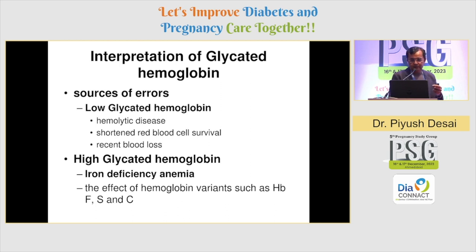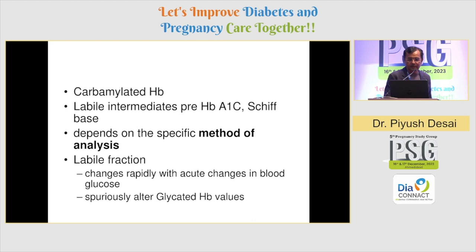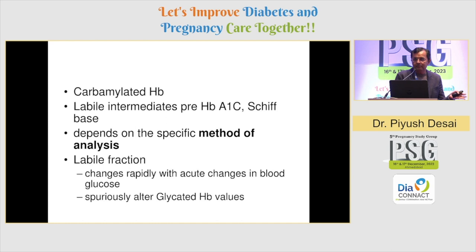This is very important: if a patient recently has very high sugar, their HbA1C may go up — that doesn't mean the patient has had uncontrolled sugar for the last three months. HbA1C can also lead you in the wrong direction. If a patient is having hemolytic disease, shorter lifespan red blood cells, or recent blood loss, it can make HbA1C falsely low. Iron deficiency anemia or carbamylated hemoglobin, and improper measurement methods, can also affect accuracy.